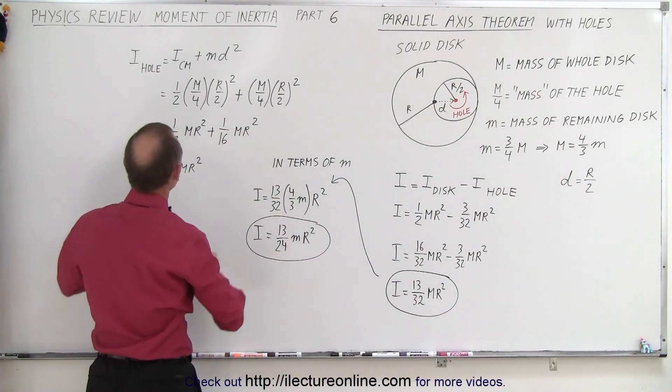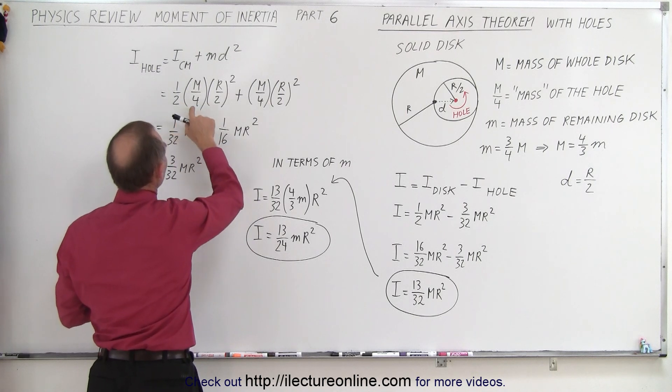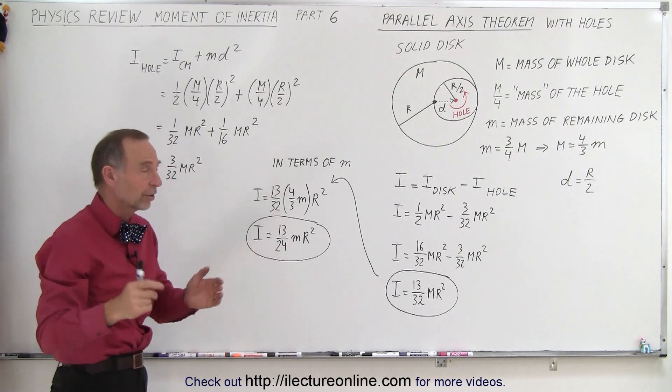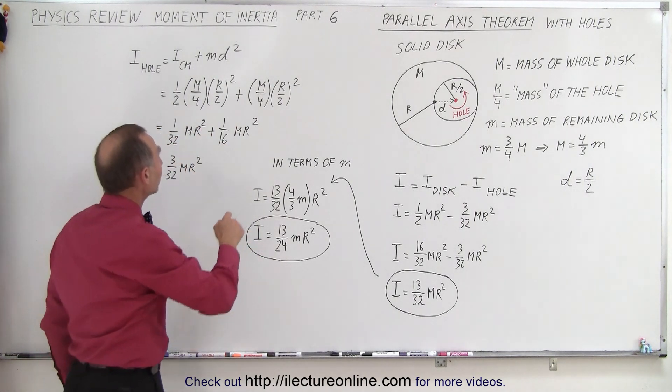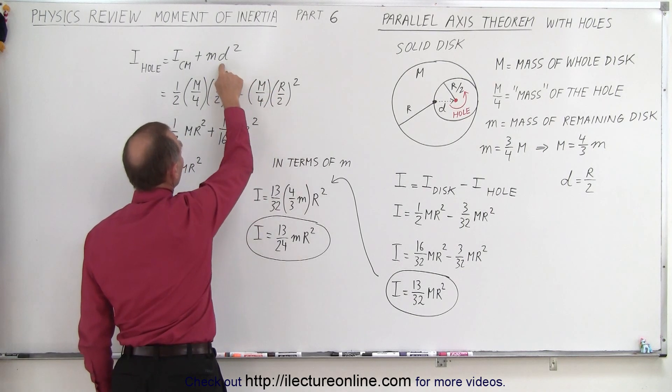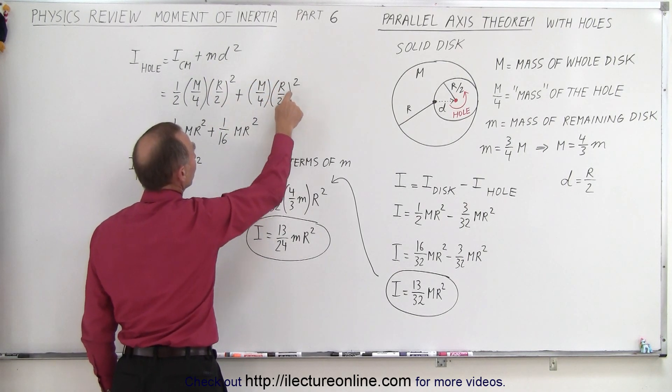We'll come back over here. We have the moment of inertia of the hole which is one half times the mass, which is one quarter the total mass, times the radius squared. Now the radius of the hole is half the radius of the disc. We add to that the mass of the hole, which is a quarter of the total mass, times the distance moved, which is r over 2 squared.